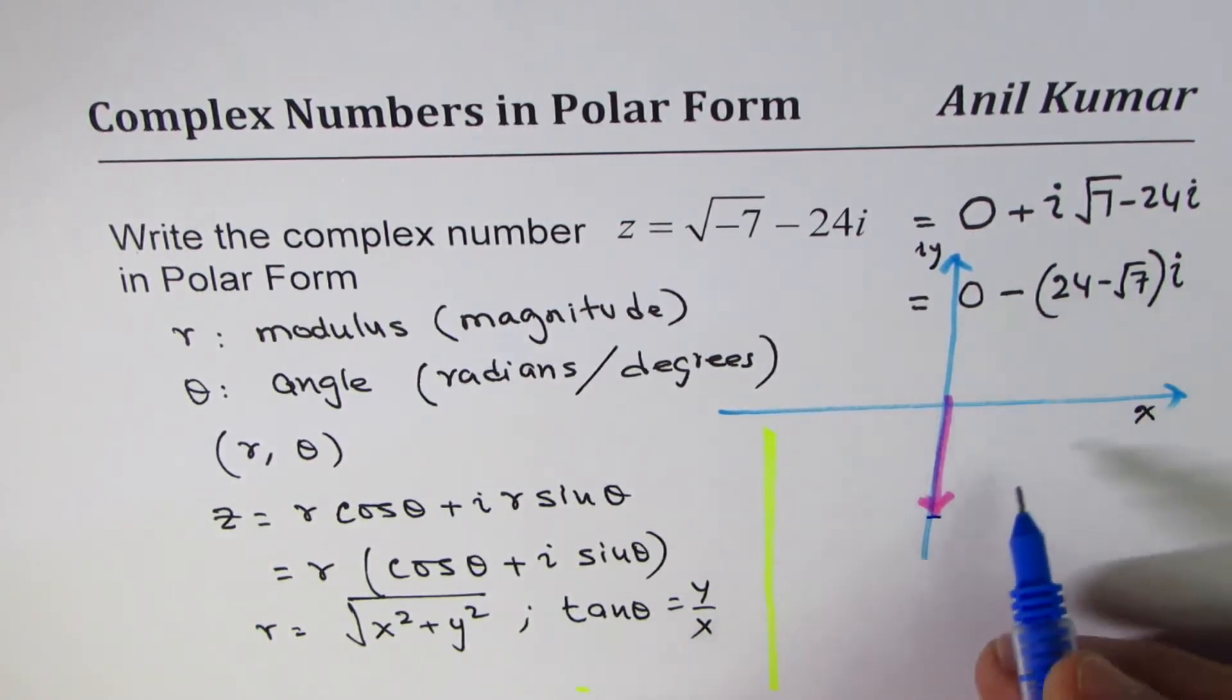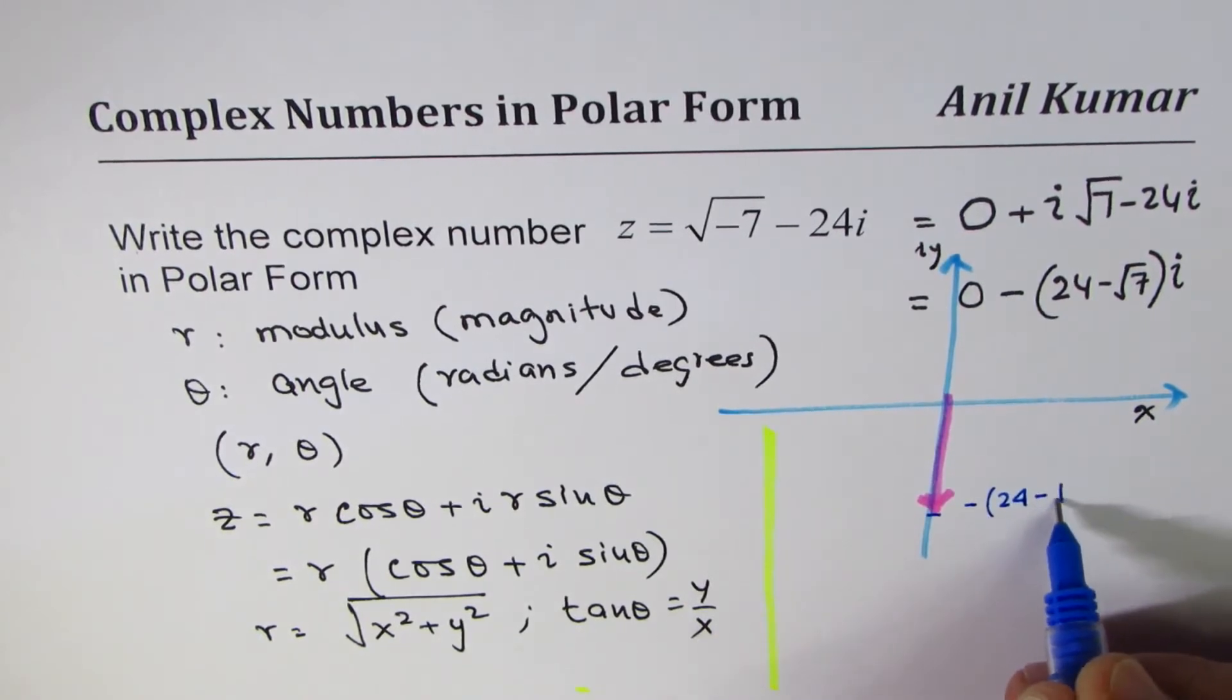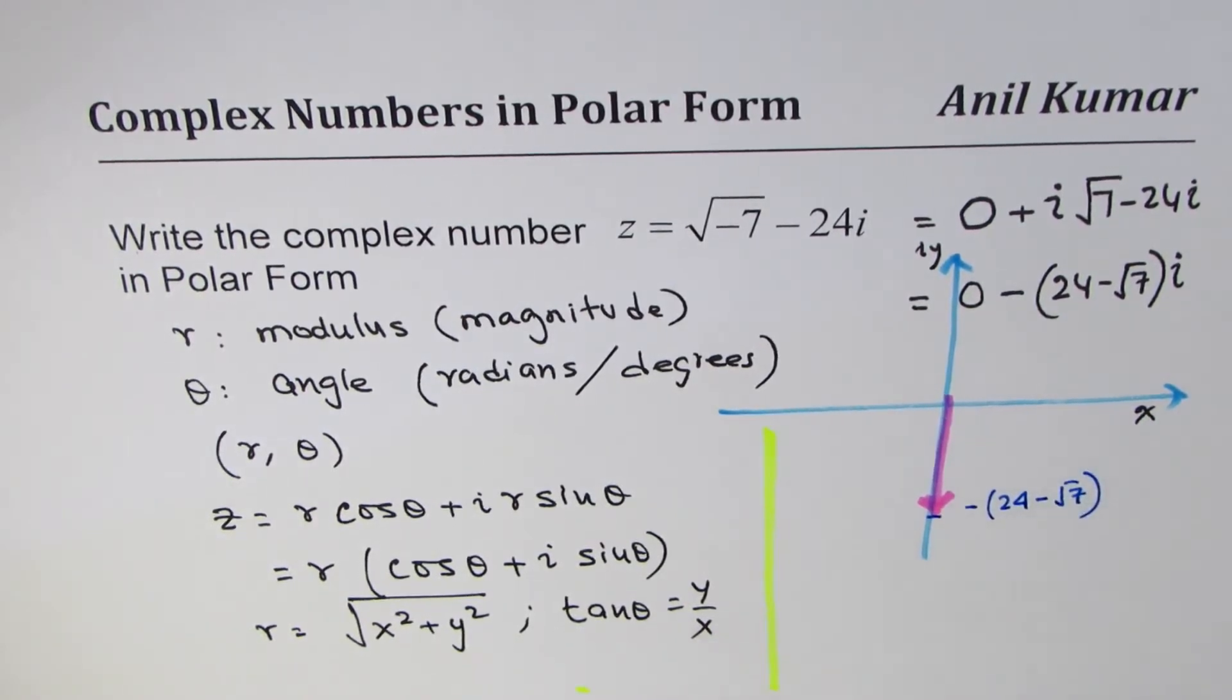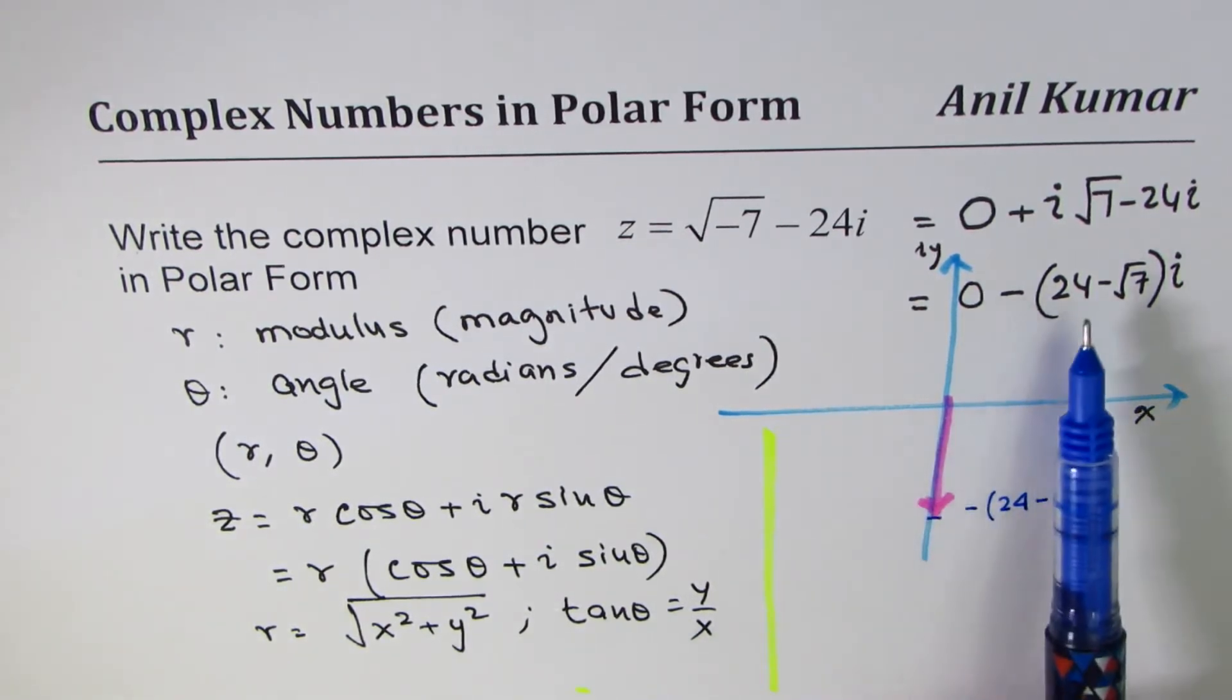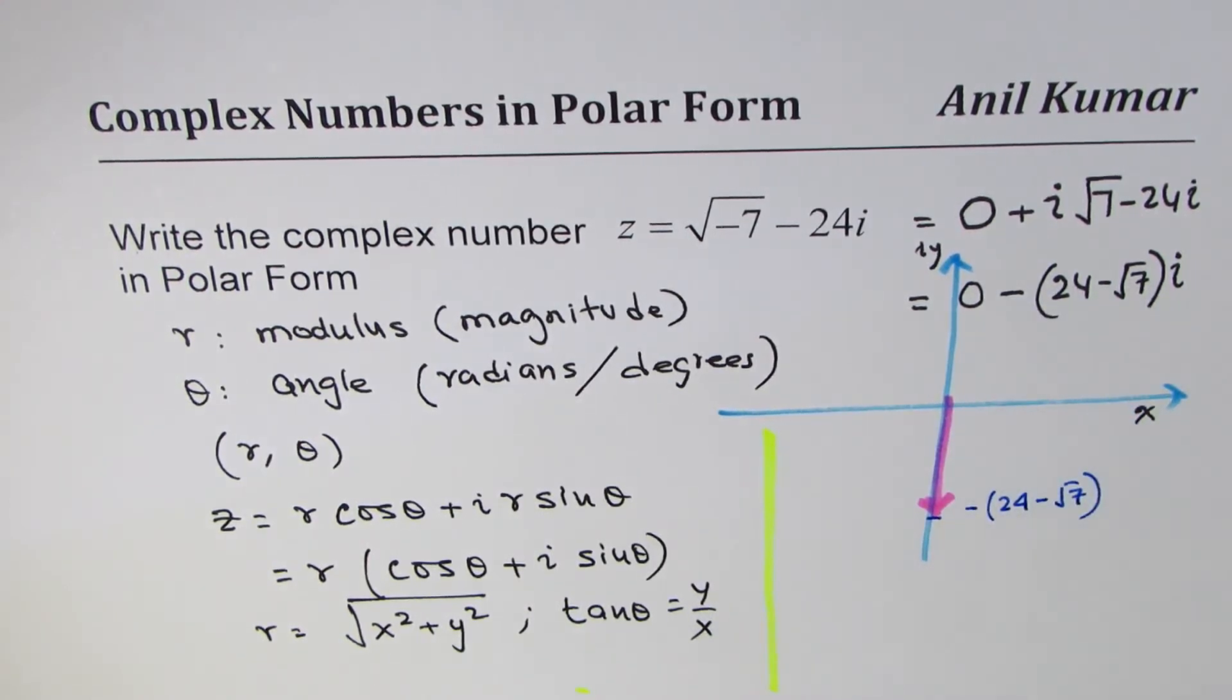And it is minus (24 minus square root 7). You can always find this value will be slightly less than 24. That becomes your vector. The magnitude for this vector: you do square of this and square root, you get the same number, right?